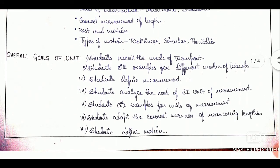In the overall goals of the unit, we have written all the goals that students must attain at the end of the chapter or unit. For example, 'Students recall the mode of transport' and 'Students cite examples for different modes of transport.' Please remember — do not write 'will': not 'Students will recall' or 'Students will cite.' We should always write it in present tense: Students recall, Students cite, Students define, Students analyze. We write all the things that students must attain at the end of completion of the chapter or unit.